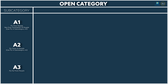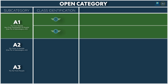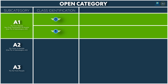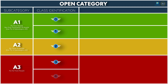Which subcategory you fly in depends on your drone's class identification. For example, if you have a C0 or C1 drone you fall into subcategory A1; a C2 drone goes into subcategory A2; and a C3 or C4 drone falls into subcategory A3.